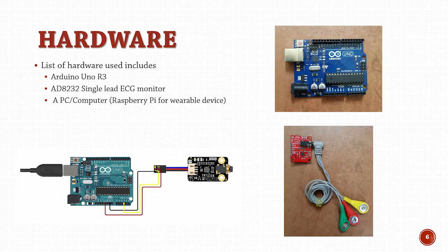The hardware used for the project includes an Arduino Uno, an ECG sensor AD8232 single lead ECG, and a PC. The electrodes connected to the ECG sensor record the ECG signals of the user's heart. These signals are then sent to the microprocessor for digitalization and then sent to the PC for further processing.